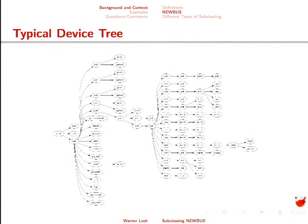This looked better on my screen earlier today. This is a typical device tree. You start with Nexus here, a whole bunch of stuff. If you look online, you can see it. It turns out that these are PCI-ish, this is ACPI, these are PCI-ish things, and USB is over here somewhere. I'm not really going to talk too much about it, so you don't need to see the details, but this is from a typical system. It's kind of crazy.